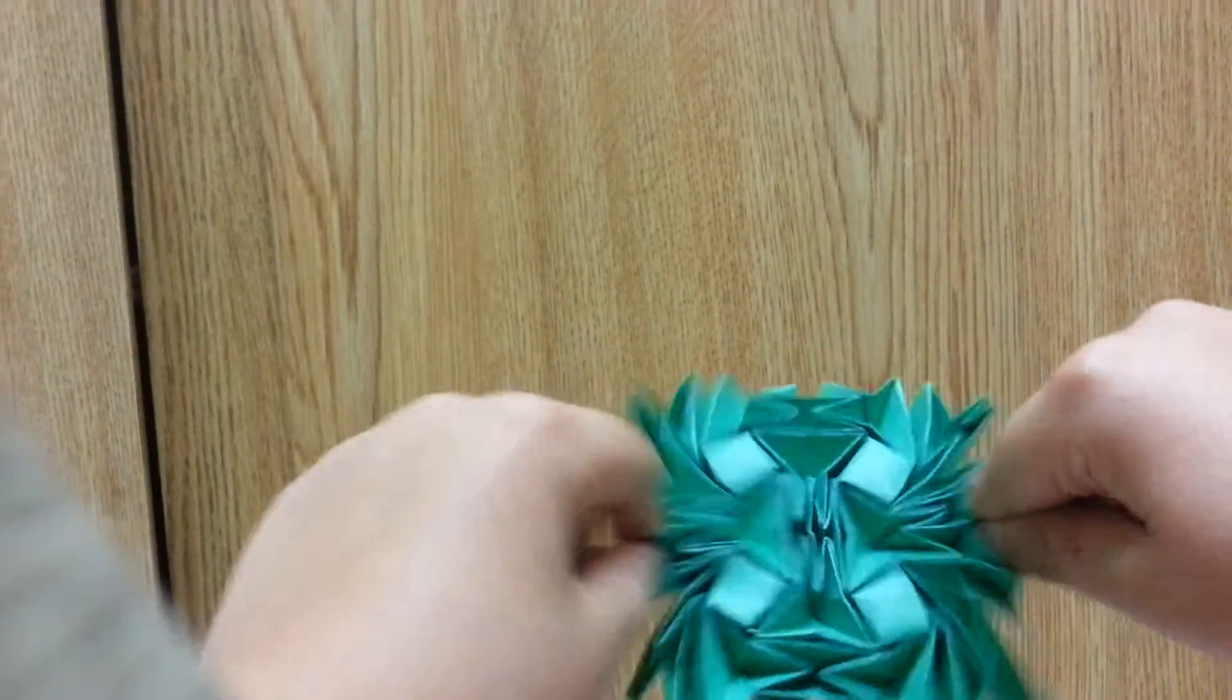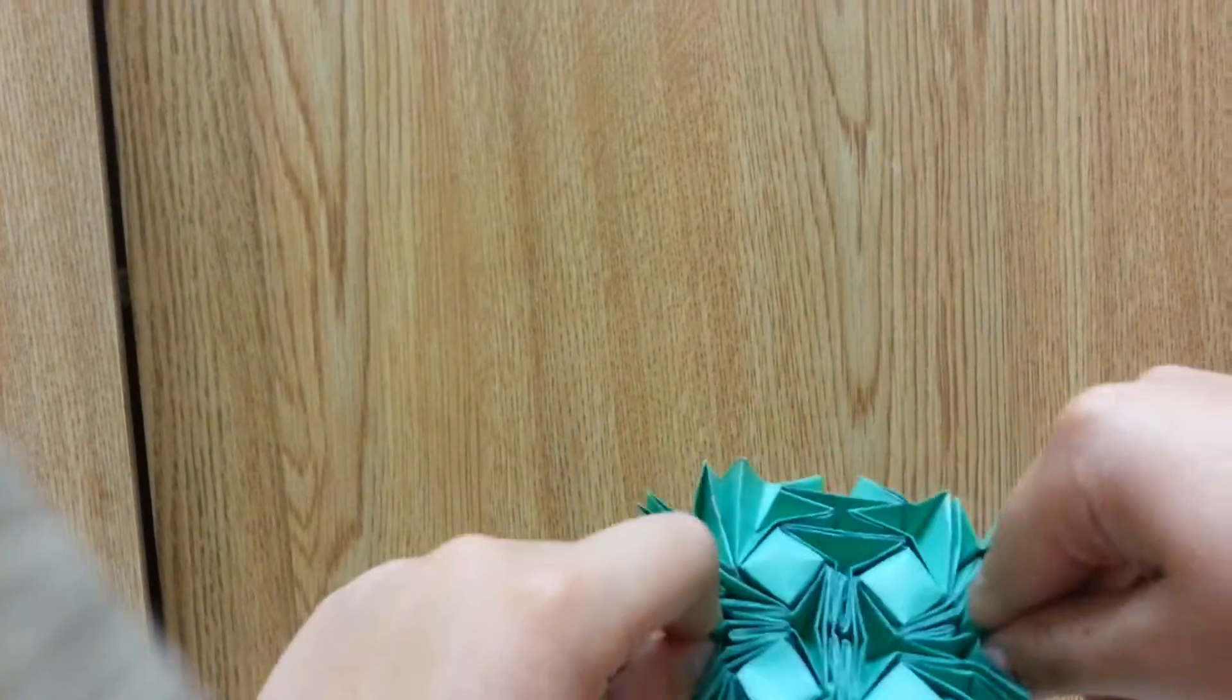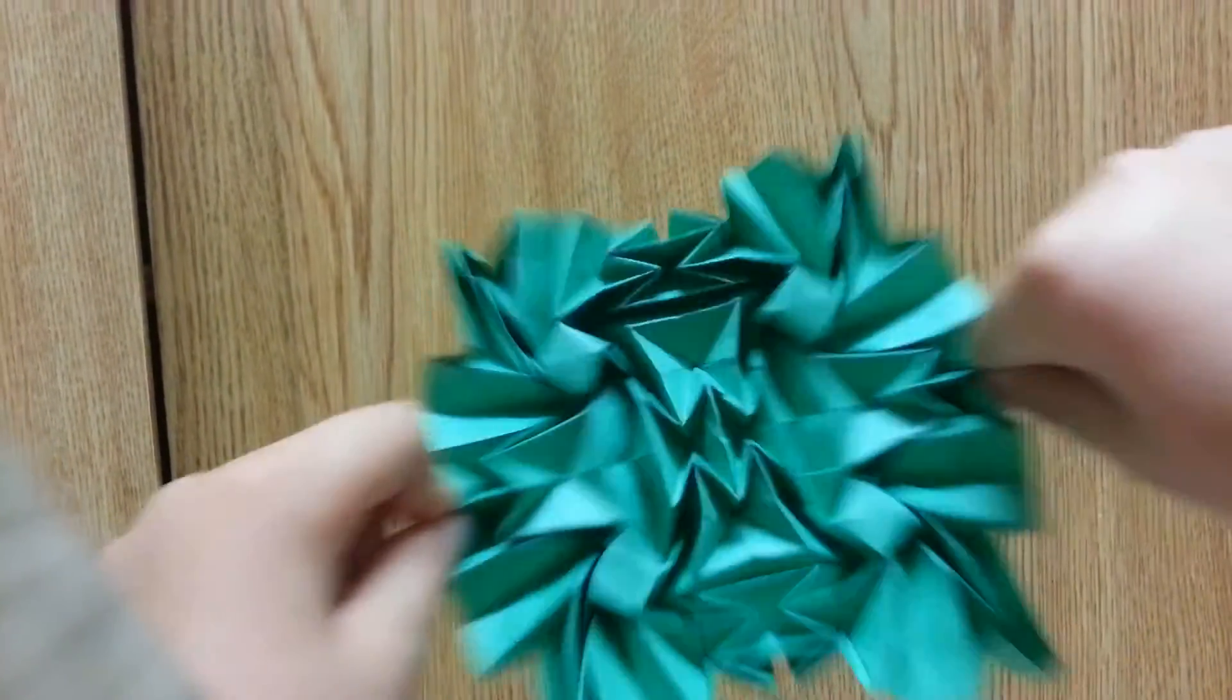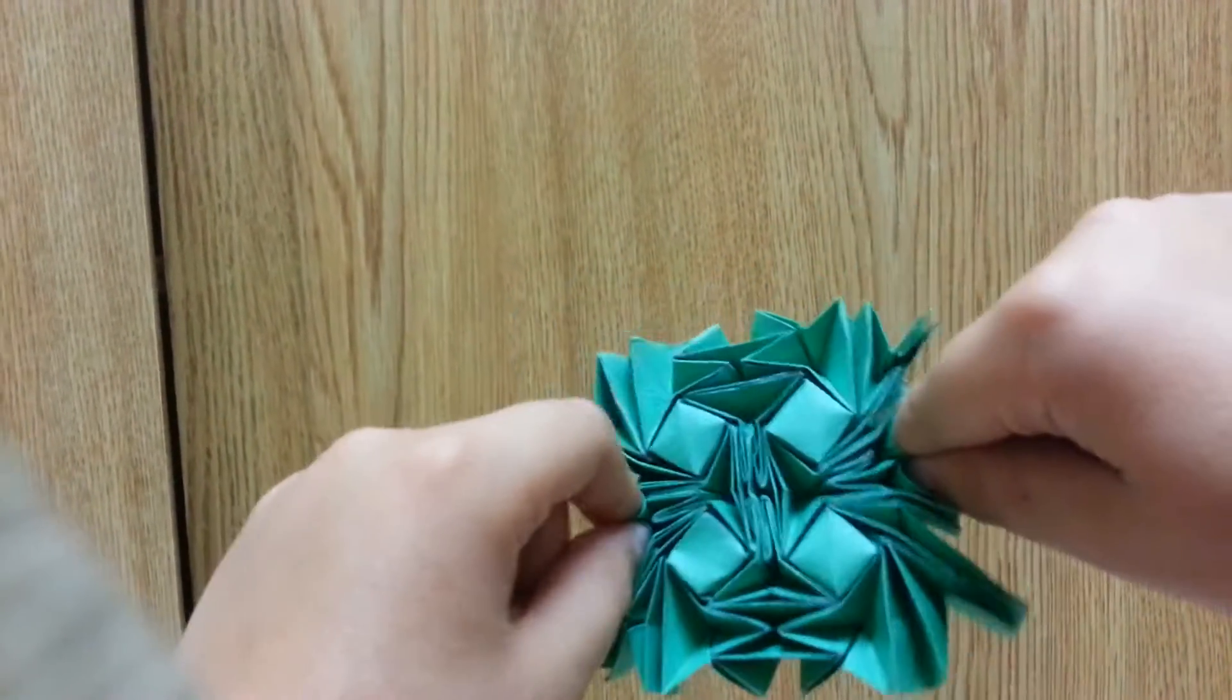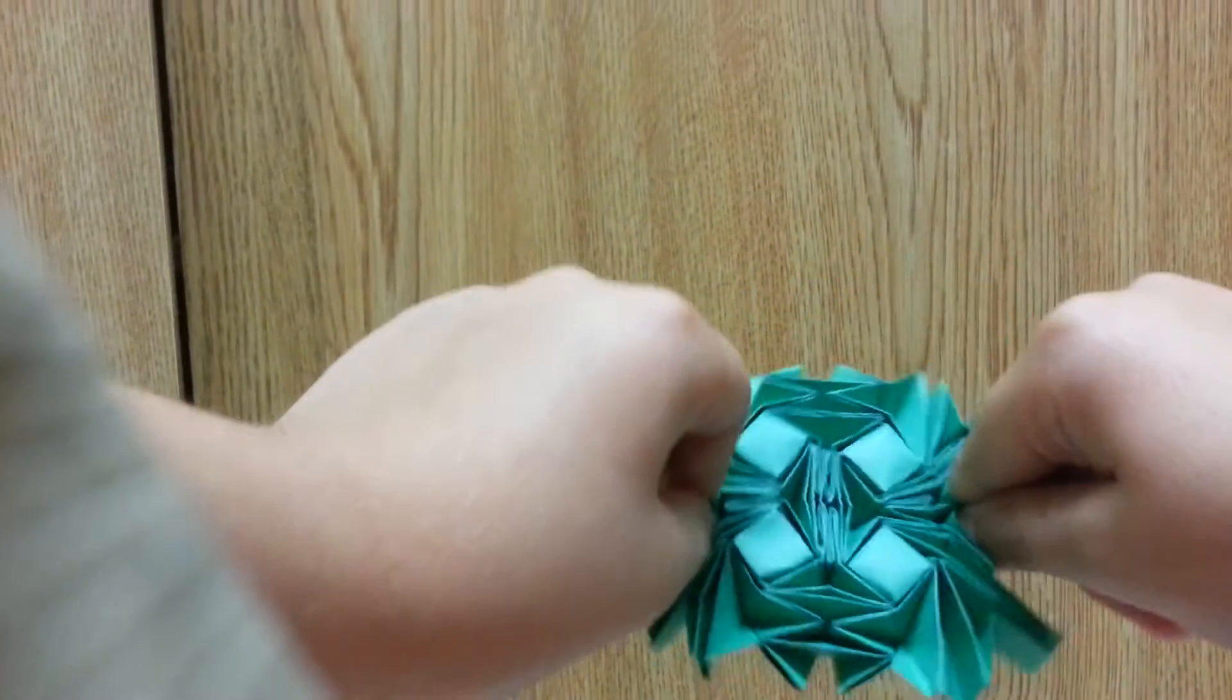Man, my light doesn't have the best lighting. This is supposed to be like a dark green. But my camera, it looks like a blue green. But it's just green.